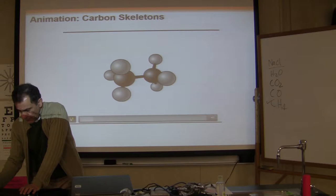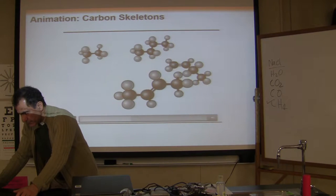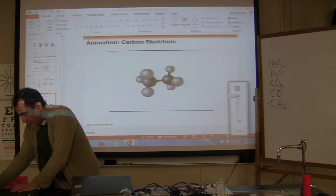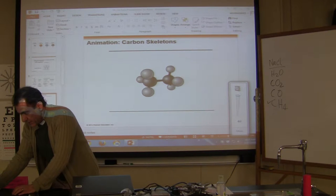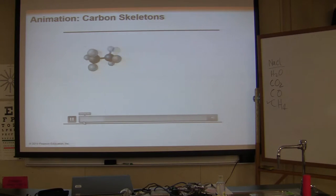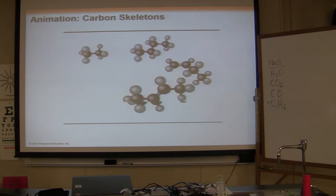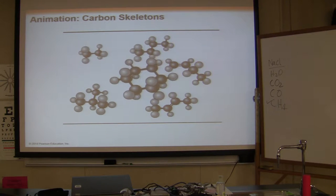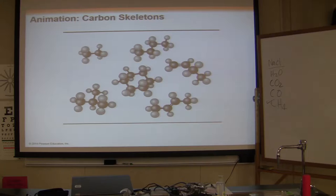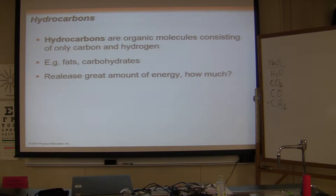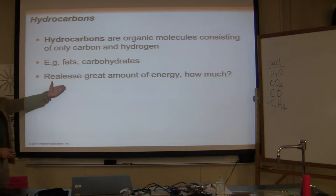The carbon backbones of organic molecules may vary in length and in the location of single and double bonds. Molecules may be straight or branched, and may even contain rings of atoms. Hydrocarbons are organic molecules consisting of only carbon and hydrogen. Examples include fats and carbohydrates, which release a great amount of energy.